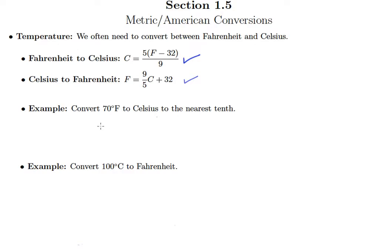We're going to convert 70 degrees Fahrenheit to Celsius, and round to the nearest tenth if necessary. Since we're going from Fahrenheit to Celsius, we'll use that first formula. So Celsius equals 5 times (70 minus 32), all divided by 9.